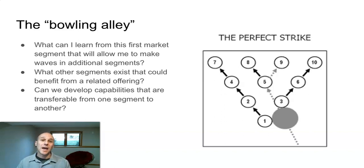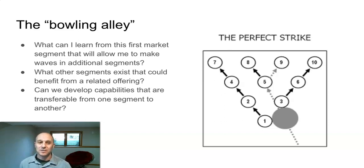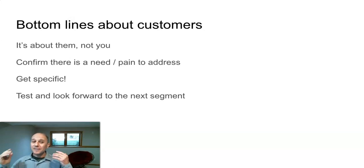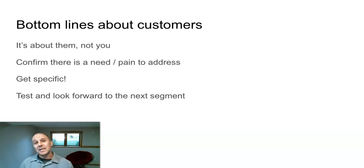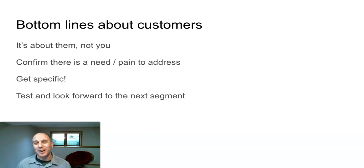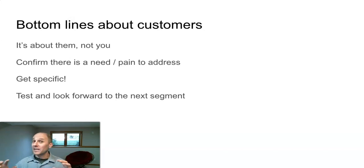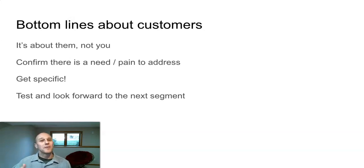Will we develop necessary capabilities in going after this first market segment that will make it easier to go after the following ones? Not every venture has the resources or time to approach it this way, but if you can, it means you're really thinking forwards and giving yourself a better probability of success. Bottom line: it's about customers, not about you. You really have to confirm that there's a need or a pain to address — not just say it or show it logically, but get that information directly from them. Be specific about who those first five or ten customers are. That's what a VC really wants to hear. And if at all possible, test that prototype in front of your first segment, then think about what additional segments are available to you afterwards.